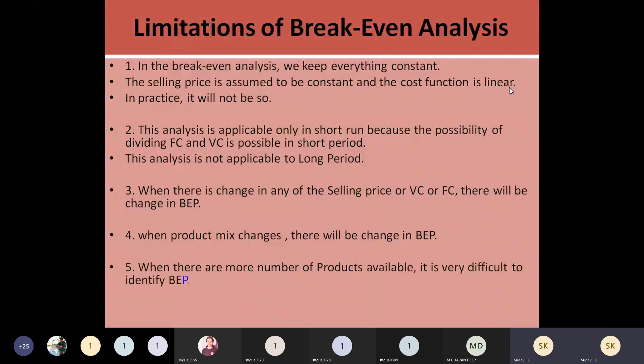When there are more number of products — for example, 10 to 20 products that a company is producing — for each and every product they need to identify the break-even point. This will be a critical situation to separately identify fixed costs and variable costs for each and every product and identify the break-even point.